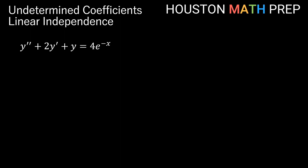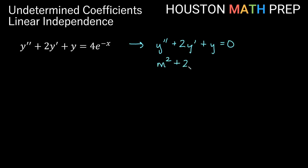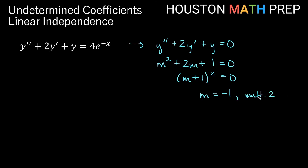In our final example, we show how sometimes multiplying by x isn't enough. We have y double prime plus 2y prime plus y equals 4e to the negative x. The characteristic polynomial is m squared plus 2m plus 1, which factors as m plus 1 quantity squared equals 0, giving m equals negative 1 with multiplicity 2 — a repeated real root. So y sub c equals c1 e to the negative x plus c2 x e to the negative x.